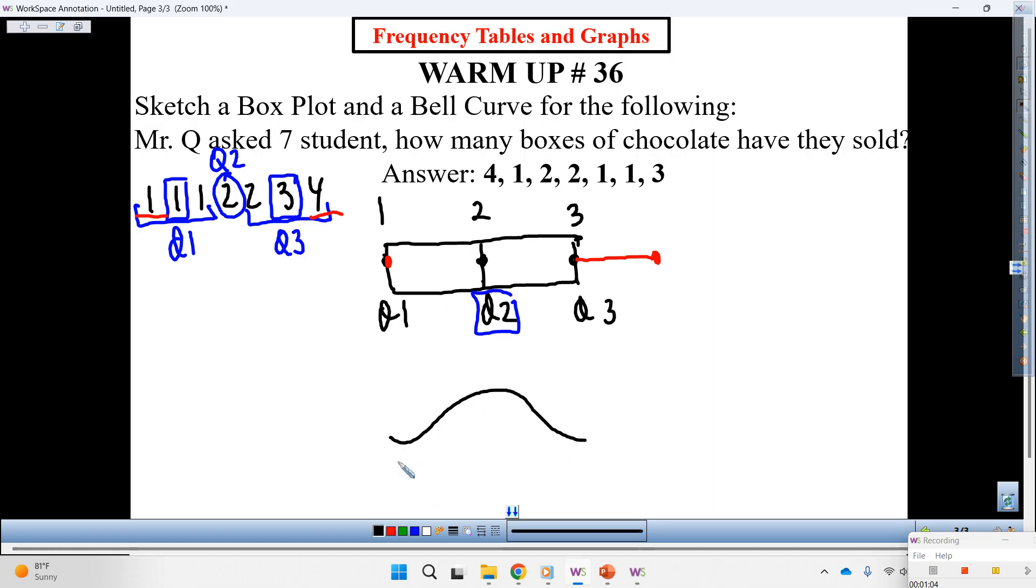Bell curve. We need a mean. What did you get for your mean? Vianney. Seven. Hands, have you got seven? Double check. Four plus one plus two plus two plus one plus one plus three, that is 14 divided by seven, that is two.